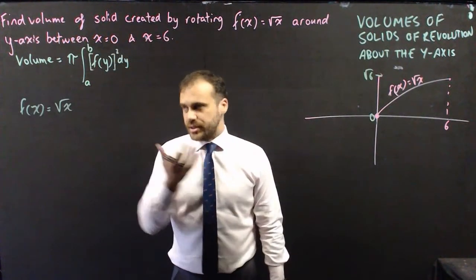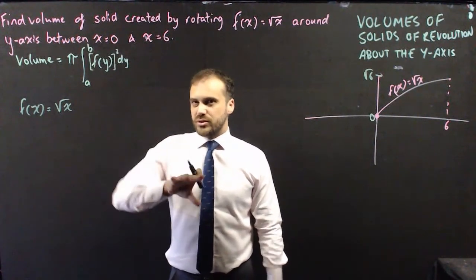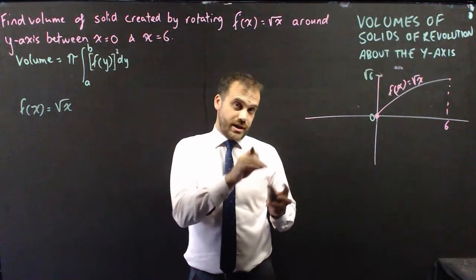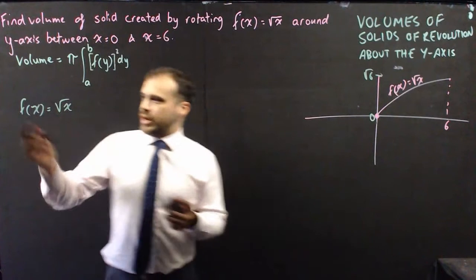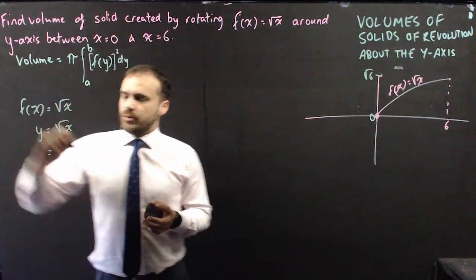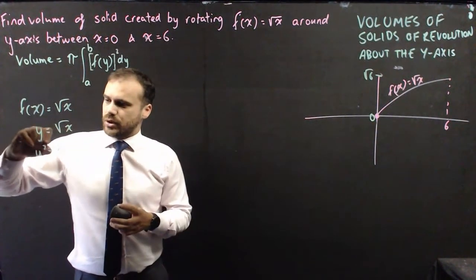It's a really easy idea. We just need to rearrange f(x) equals root x, so that we've got x isolated on one side and we've got a function with y as the variable inside of it. So f(x) equals root x, we can rewrite it as y equals root x. We can then rewrite that as x equals y squared.